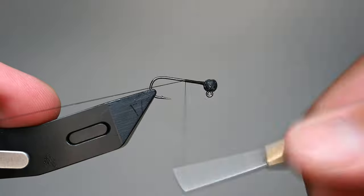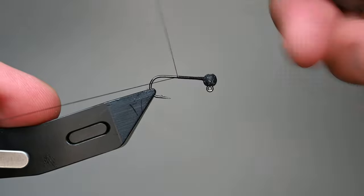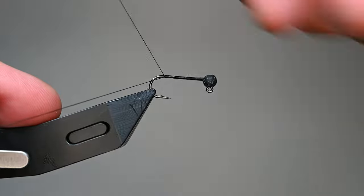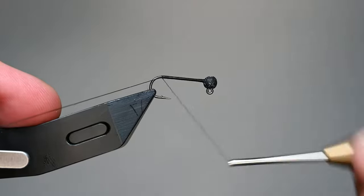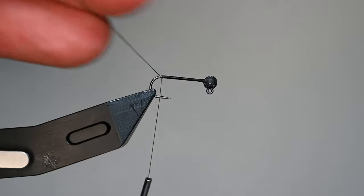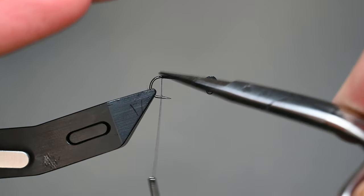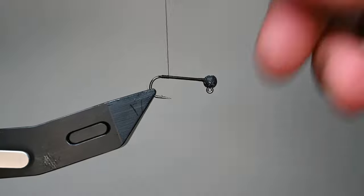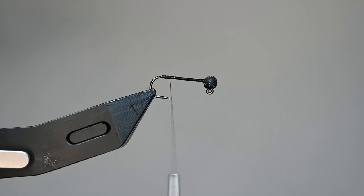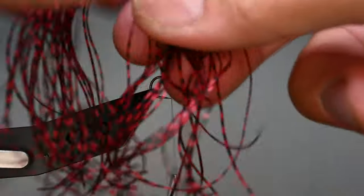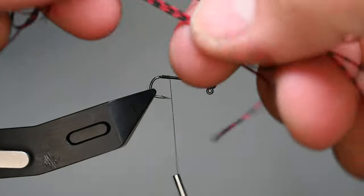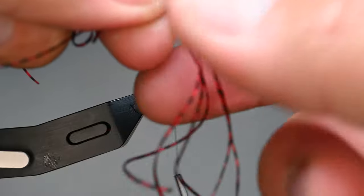Then we'll start our thread right behind it, going down about five or six wraps and then going back up to build up a little bit of a thread dam so that slotted bead stays there for the remainder of tying this fly. Then I'll hold my tag end at a 30 to 35 degree angle away from the hook shank.